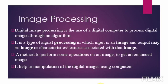Welcome to the one minute tutorial on image processing. Image processing is a method to perform some operation on an image in order to get an enhanced output or to extract some useful information from it. It is a type of signal processing in which the input is an image and the output may be an image or characteristics or features associated with that image.